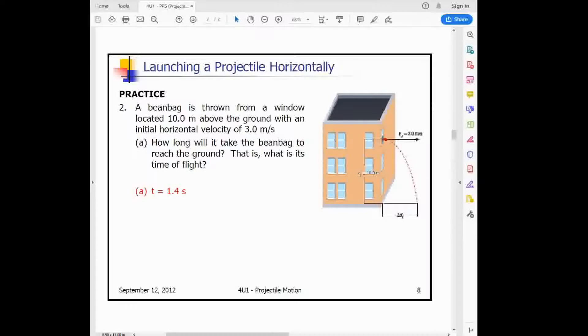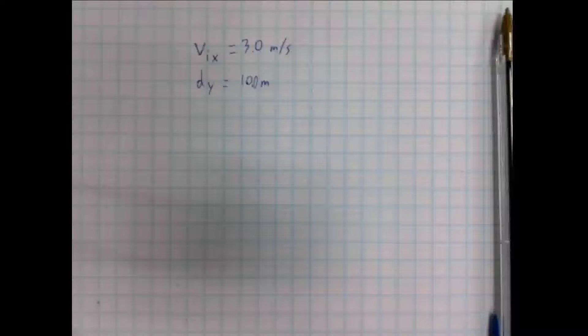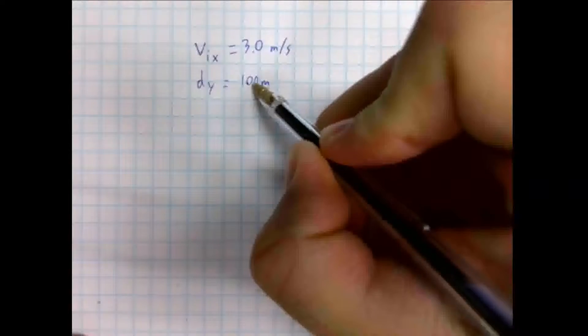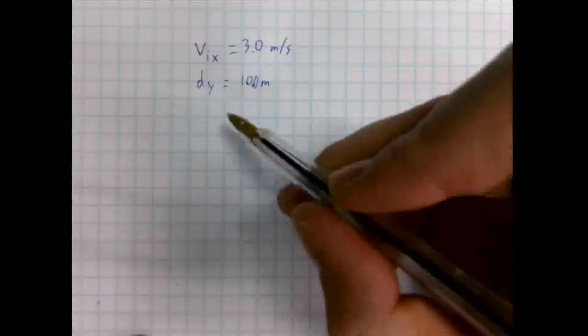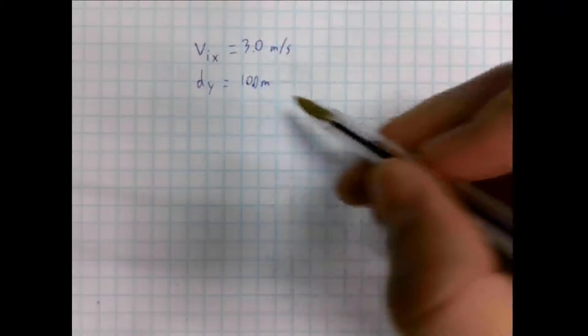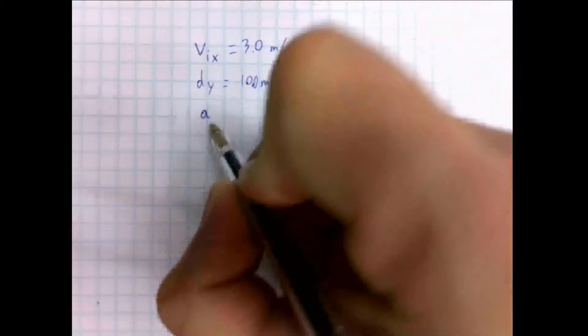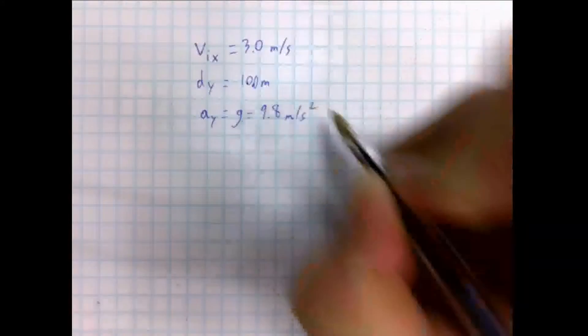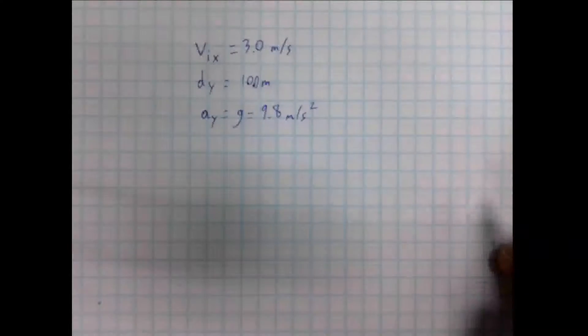Here's a question. A beanbag is thrown from a window that is located 10 meters above the ground with an initial horizontal velocity of 3 meters per second. How long will it take the beanbag to reach the ground? What is its time of flight? For this problem, we can start by writing down the initial information. We know that vix is 3.0 meters per second, and we know that dy is 10.0 meters. We're also going to know that the acceleration due to gravity, ay, is equal to g, which we're going to use as 9.8 meters per second squared.